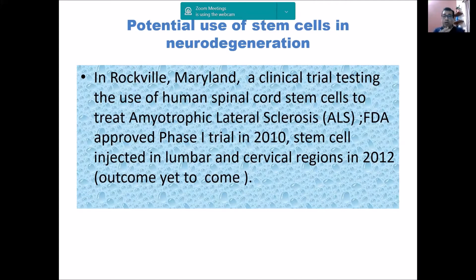In amyotrophic lateral sclerosis patients, there was an FDF-2 trial in 2010 with stem cells injected into the lumbar and cervical regions, and this study started in 2012. The preliminary results are promising but the jury is still out. In neurodegeneration broadly, there have been very promising results and we are all watching how it goes forward.